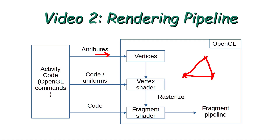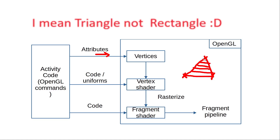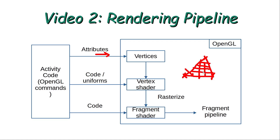After that, the rasterizer will divide the area into pixels and into fragments. Each one of these small squares is called a fragment. Then it will run another program called the fragment shader on each one of these fragments, which can be used to define properties for each pixel that will be shown on the screen.